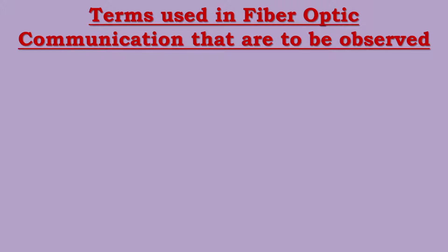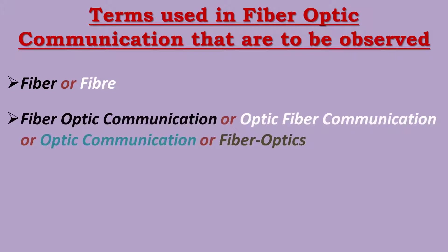In this chapter, we will talk about the term Fiber or Fibre. The spelling is changed but the pronunciation is the same. The spelling is F-I-B-E-R, and the other spelling is F-I-B-R-E. Both spellings are correct.